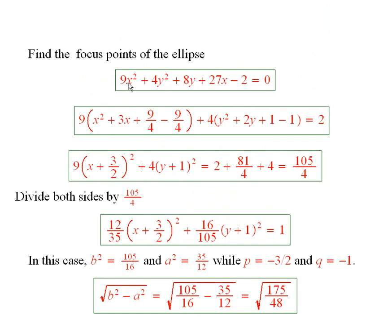We will factor out the 9 from this term and this term. That gives x squared plus 3x. Then we take half of this, square it. It gives us that, and we add it in and subtract it off.